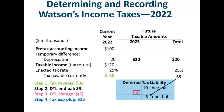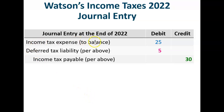Multiply that $20,000 timing difference times 25% and that leaves a $5,000 ending credit balance in the deferred tax liability account. Step three: calculate the change necessary in the deferred tax liability to move its balance from its beginning balance to its correct ending balance. It had a $10,000 credit balance to begin with, so we have to debit the account $5,000 to get its ending balance down to the correct $5,000. Step four: plug the tax expense. $30,000 credit to income taxes payable minus a $5,000 debit to deferred tax liability means income tax expense is $25,000. Journal entry: debit income tax expense $25,000, debit deferred tax liability $5,000, and credit income taxes payable $30,000.